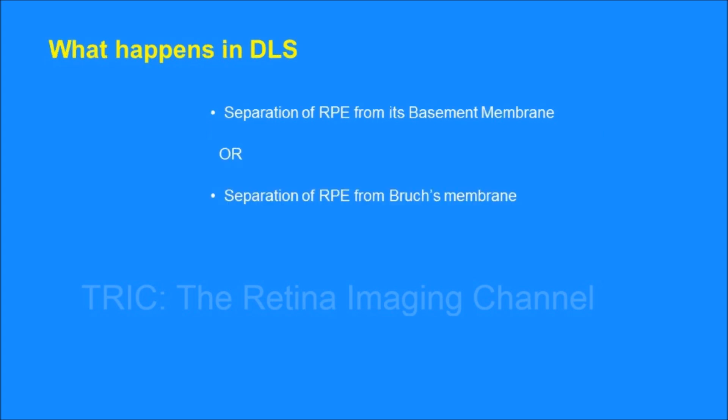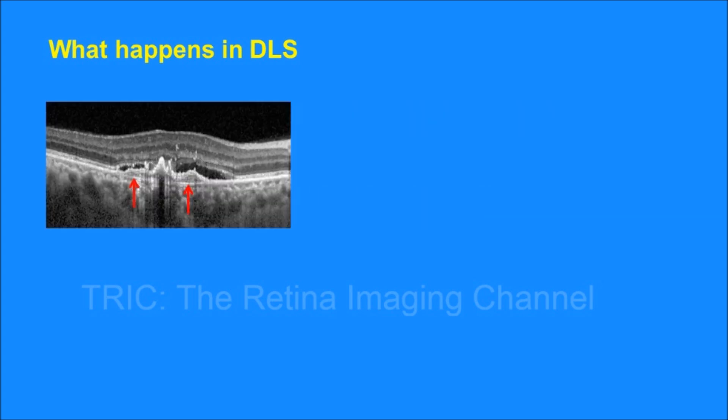With this background we are ready to understand DLS. In DLS there happens a separation or splitting of RPE from its basement membrane. In simpler terms, there is separation of RPE from Bruch's membrane.